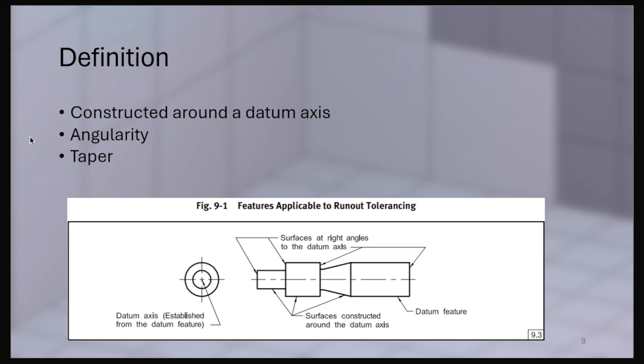So this, to me, feels like a lot of evidence that controlling a cone with a total runout should be totally allowed per the standard.